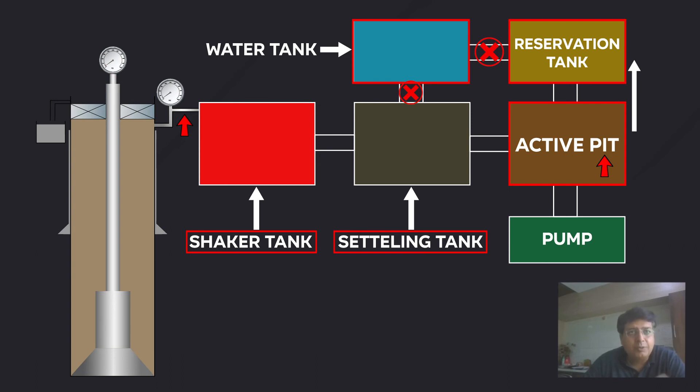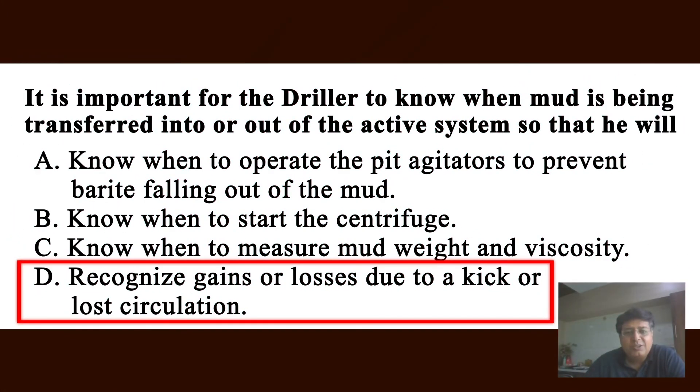Otherwise, he will go for a flow check. So the answer for this is: recognize gains or losses due to a kick or lost circulation. Because if I don't inform, then I will think that there is a gain or loss. If the fluid level increases, there is a gain. If fluid level decreases, there is a loss. So that is the reason that we have to inform the driller.